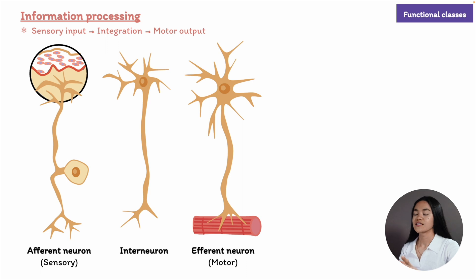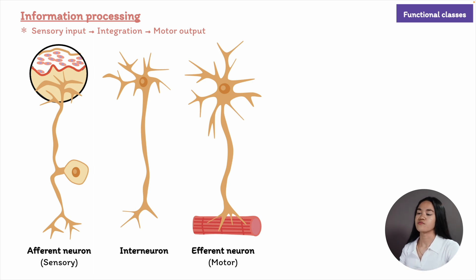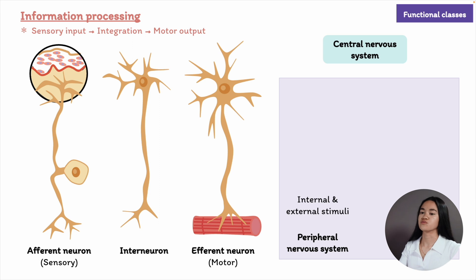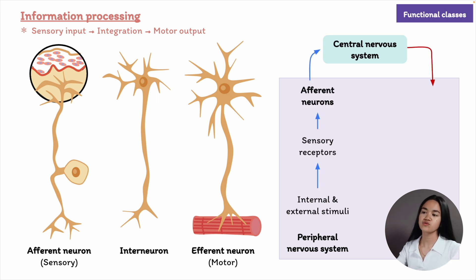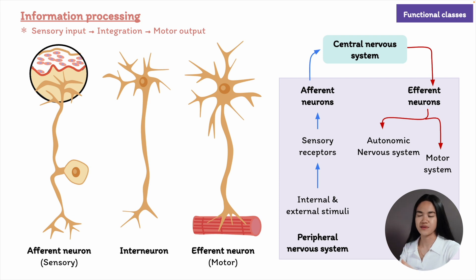Afferent neurons carry information from sensory receptors on the skin and the body's tissues and organs to the central nervous system, which includes the brain and spinal cord. Efferent neurons carry motor information from the central nervous system to effector cells, such as muscles, glands, or other cell types. Interneurons connect neurons within the central nervous system and act as a mediator between the two to facilitate communication.